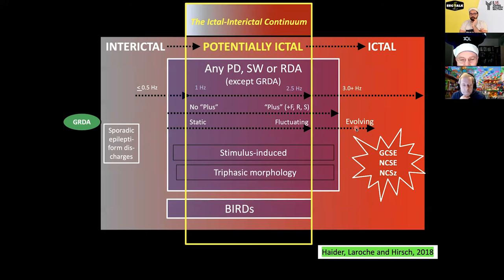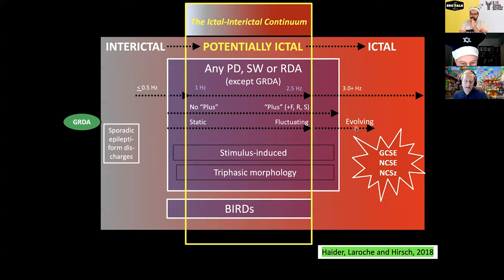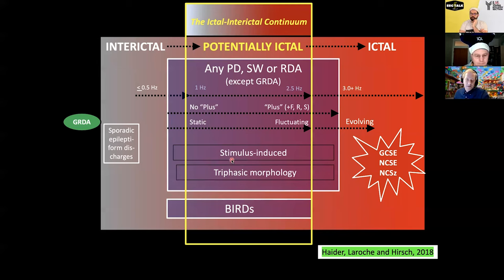I often think of this as meaning someone would potentially benefit from anti-seizure medicine. Those are the two ways treatment can help: you can improve them clinically at that moment by stopping the activity, or you're preventing secondary neuronal injury. We can't rely on clinical correlate unfortunately because these people are too impaired. Stimulus-induced and triphasic patterns have no arrows and aren't in any particular place on the continuum because we don't know if they really mean anything. Sometimes triphasic morphology is part of a definite seizure; sometimes it's on the other end entirely. If it's a stimulus-induced clinical seizure it's obviously ictal; if it's stimulus-induced GERDA it's not ictal at all.